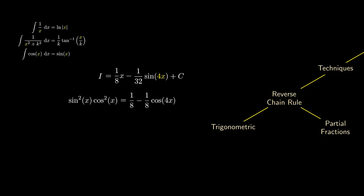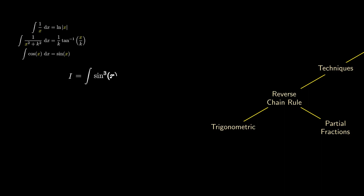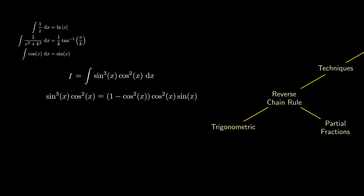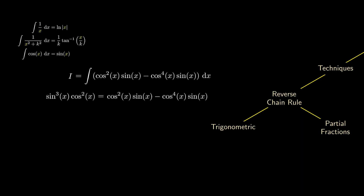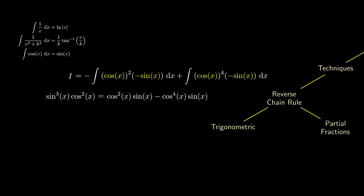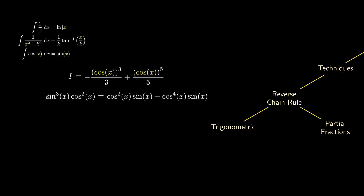Sometimes we are asked to find a similar integral except now one of the terms has an odd power. We can extract out the extra sine term, convert the remaining sine terms into cosine terms, and simplify. We can plug this expression into the integral, split up the integral, and rewrite each term. Now we have cosine and the derivative of cosine, which is negative of sine. In both cases, we are integrating a power with the derivative of cosine present for reverse chain rule, and we can easily integrate both expressions to get our final answer.